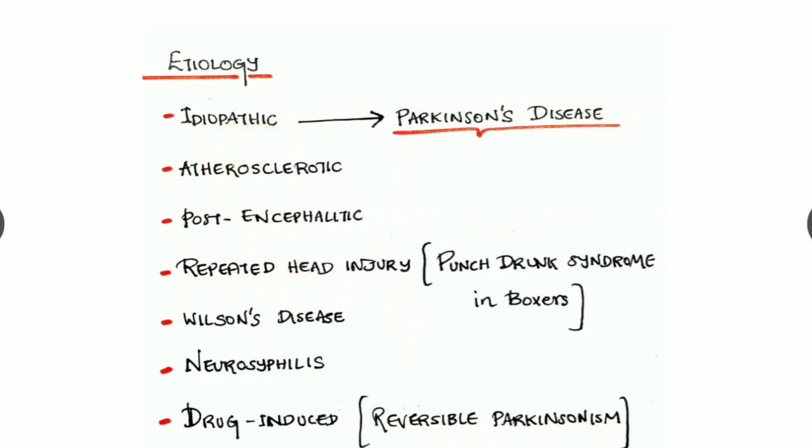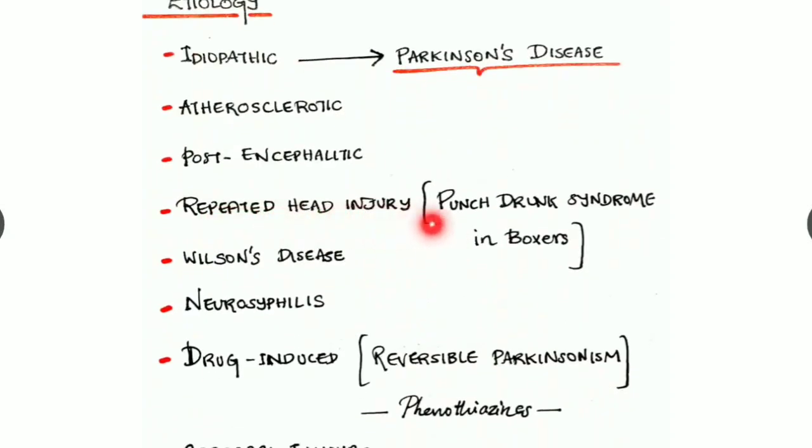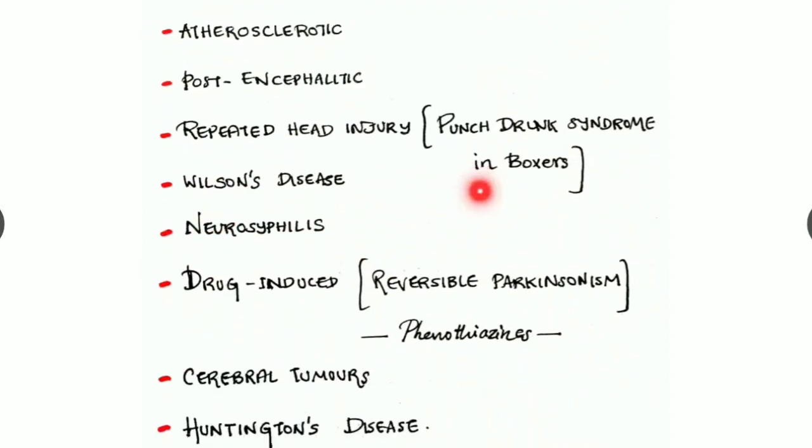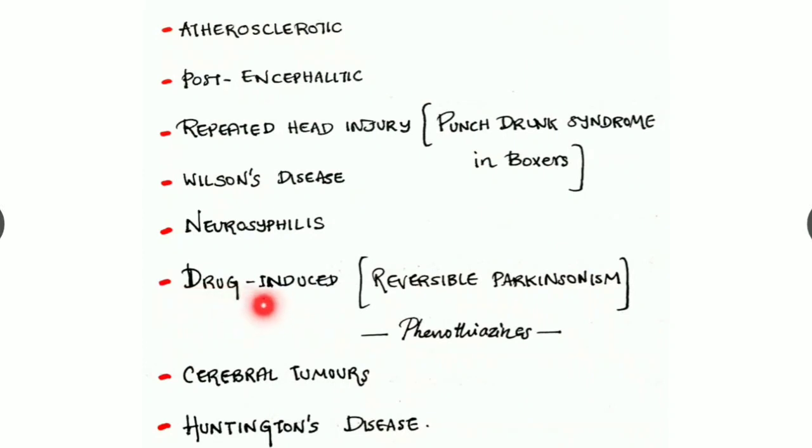Mainly it is idiopathic, and this Parkinsonism with idiopathic cause is known as Parkinson's disease. This should be thorough as there is much confusion between Parkinsonism and Parkinson's disease. Secondly, it can be atherosclerotic type, post-encephalitic type, due to repeated head injury more commonly in boxers known as the punch drunk syndrome, and it can be due to Wilson's disease, neurosyphilis, and drugs.